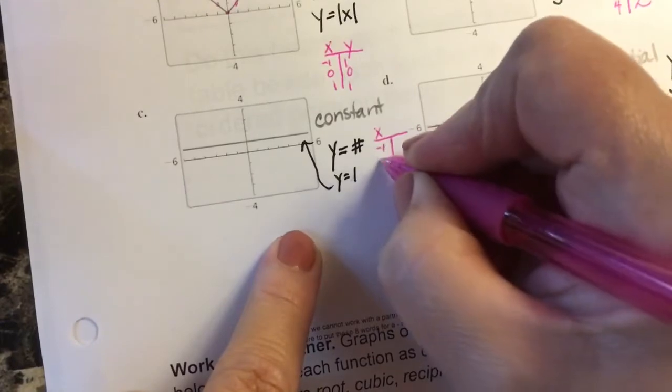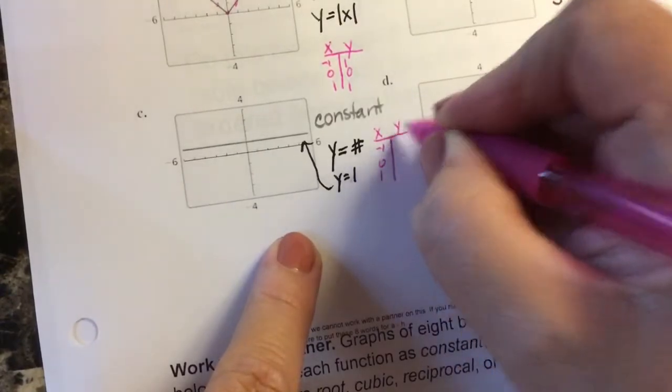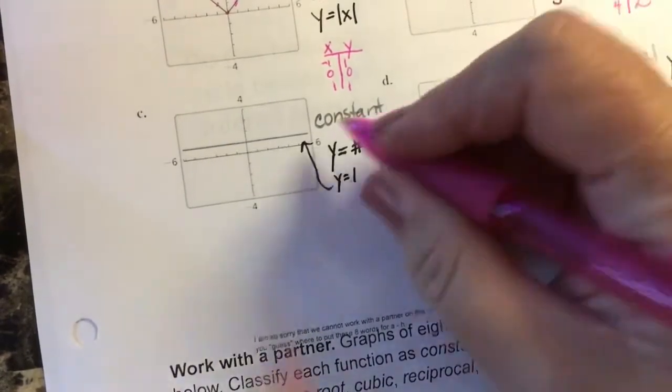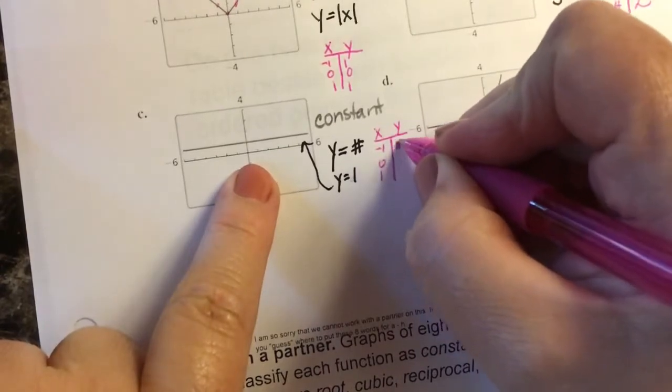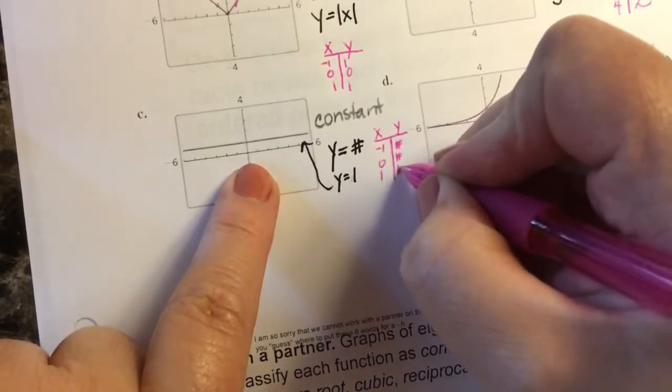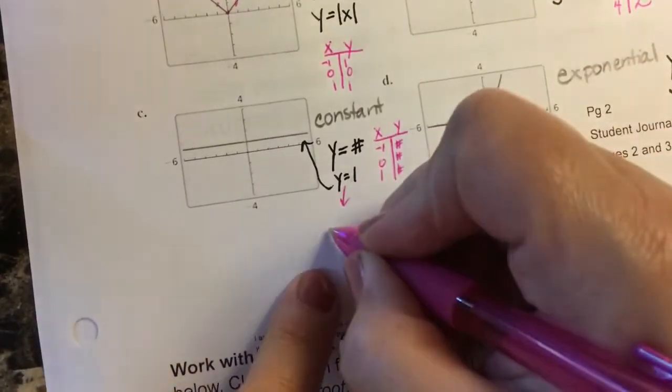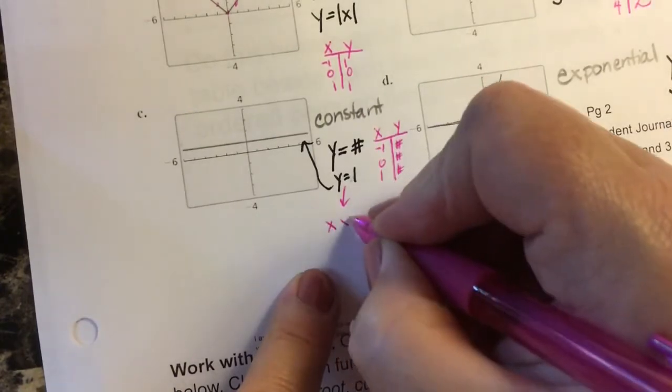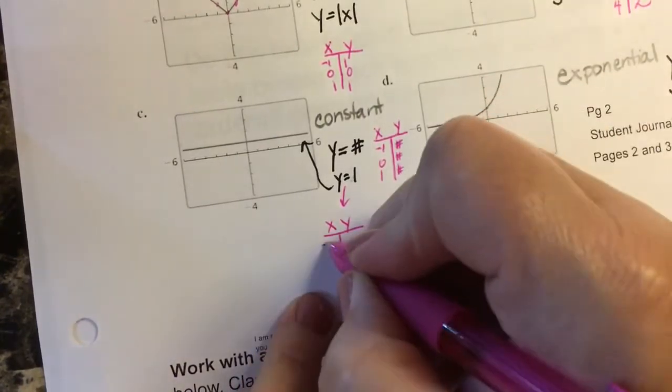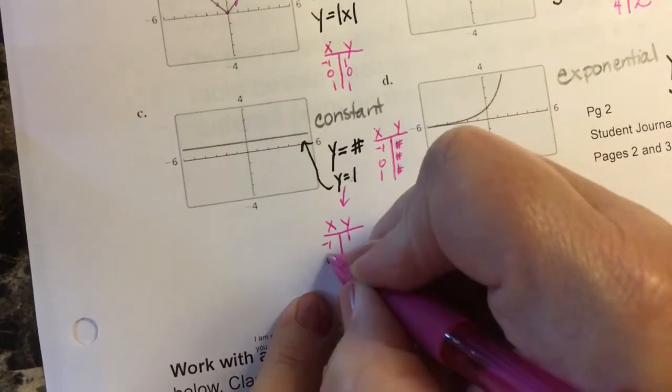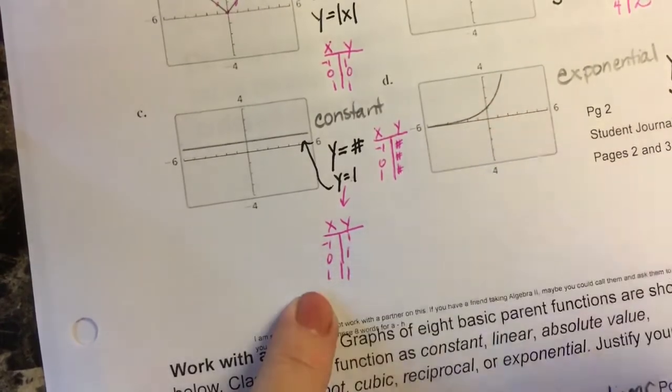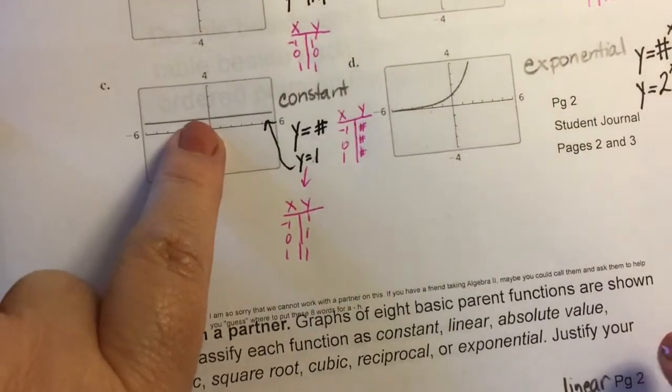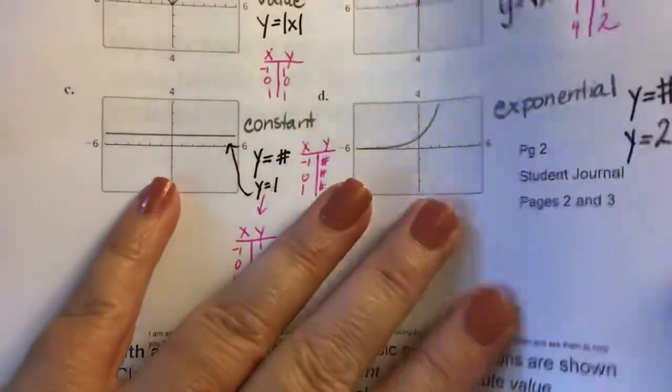For constant, you're going to use x values and your y value will be whatever your number is. It's the same number all the way through. For this particular one you're going to have (-1, 1), (0, 1), (1, 1). That's for this parent function.